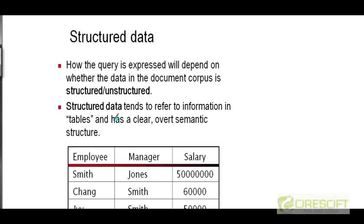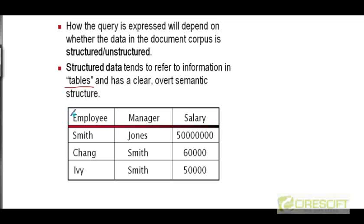Structured data tends to refer to information in the form of tables. For example, here is a table of employee records. You can see that there are three columns in this table, and each column has a name: Employee, Manager, and Salary. Each row of this table corresponds to one employee record with these three fields or attributes. Now if you've done a course on database systems, you know that the technical name for such tables is relations.